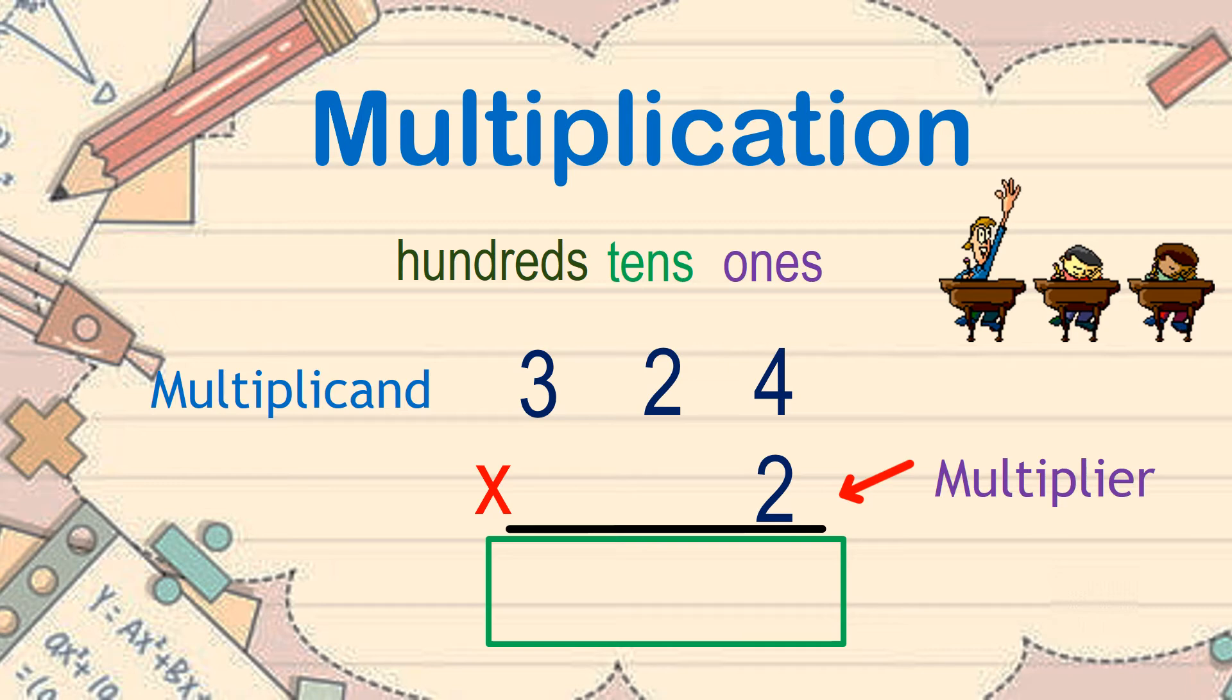From the ones place, we have 4 times 2, which is 8. In the tens place, we have 2 times 2 equals 4. And in the hundreds place, 3 times 2 is 6. There you have it. 324 times 2, the product is 648.